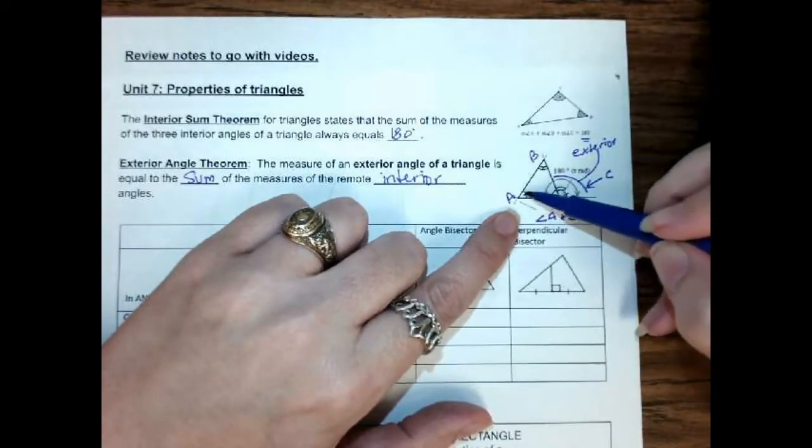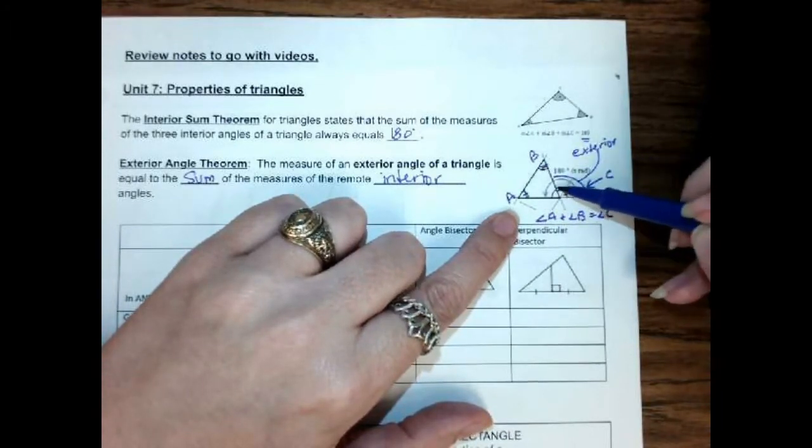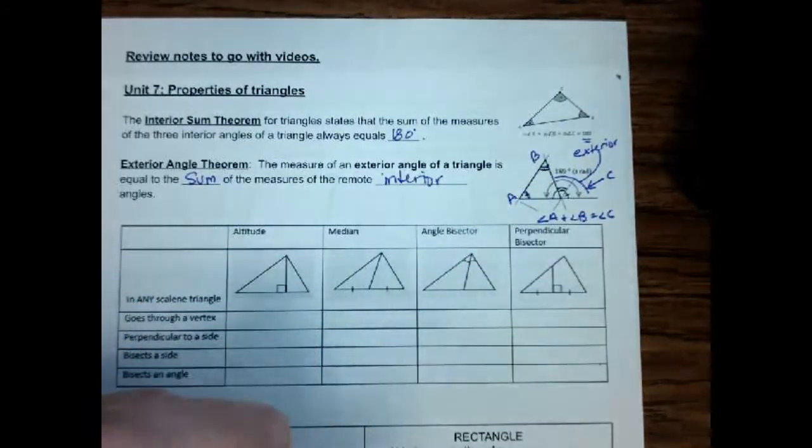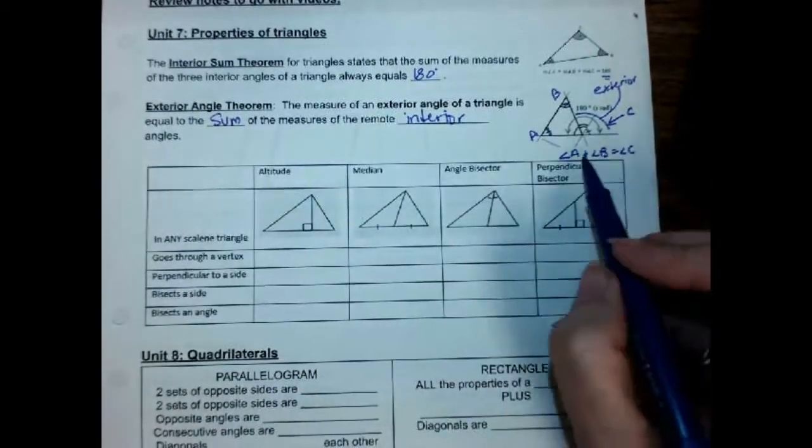And you kind of see here where they took this angle here and they put it right there, and they took this one right here and put it right there, and they show that it makes up to be a straight line, which is 180. Which is why these two are equal to that one.